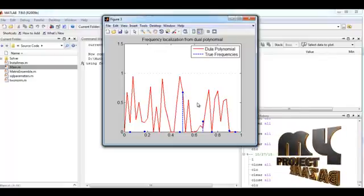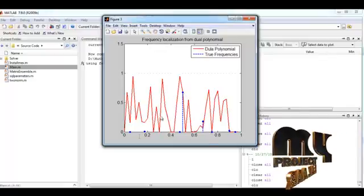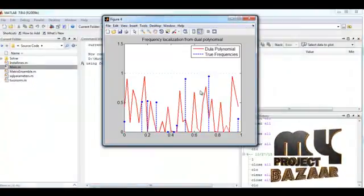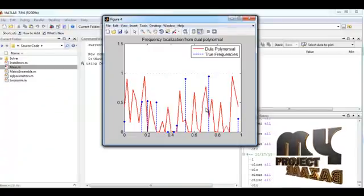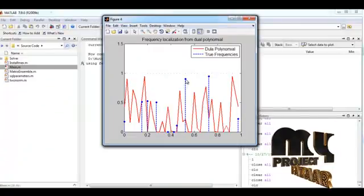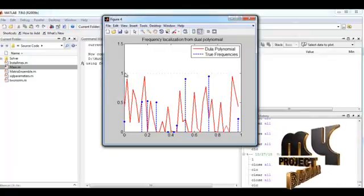This is also frequency localization from dual polynomial representation. Here the true frequencies are obtained at maximum level and the static line is represented in this section.